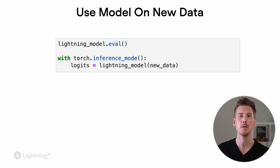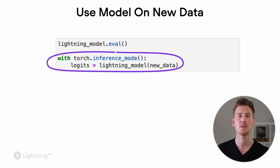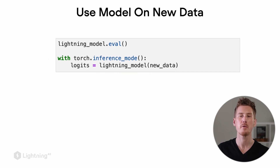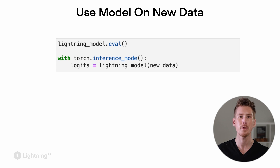When we use the model on new data, it's highly recommended to run the model in inference mode as shown here. This will prevent the computation graph in the background from being constructed, and it will save you a lot of memory if you are not training the model.